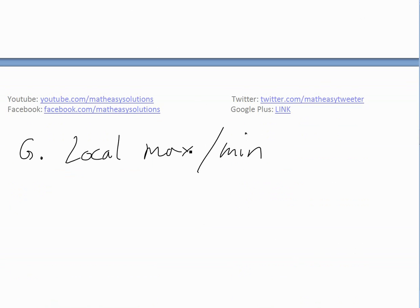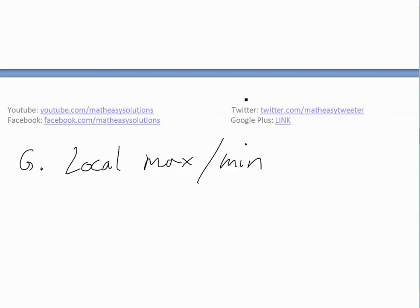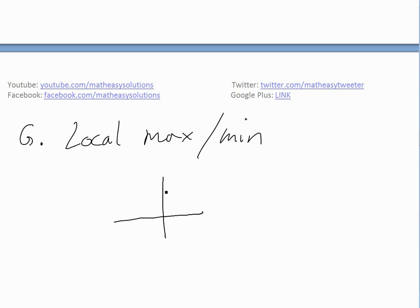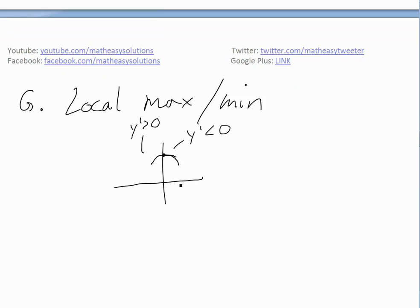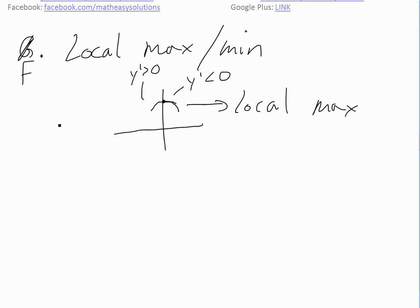Now for part F — local max and minimums. Since the function is even and decreasing on the right side (x > 0), by symmetry it must be increasing on the left side (x < 0). So y' changes from positive to negative at x equals 0, which by the first derivative test means x equals 0 is a local maximum. That's the only critical point and the only local max or min we have.